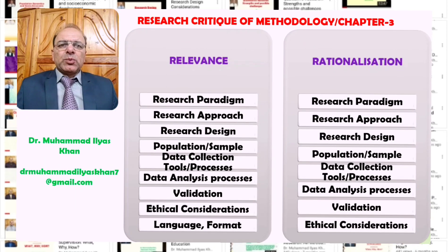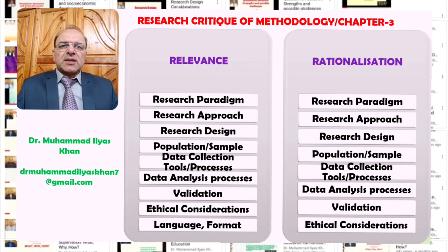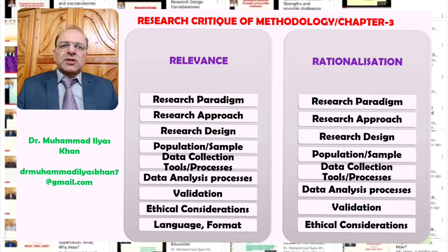When thinking about research critique of the methodology chapter, there are two main criteria on which the process takes place. The first is relevance — whether the areas covered in the methodology section are actually relevant to the particular research conducted. The second is rationalization — in what ways has the researcher justified the selection of their methodological choices?